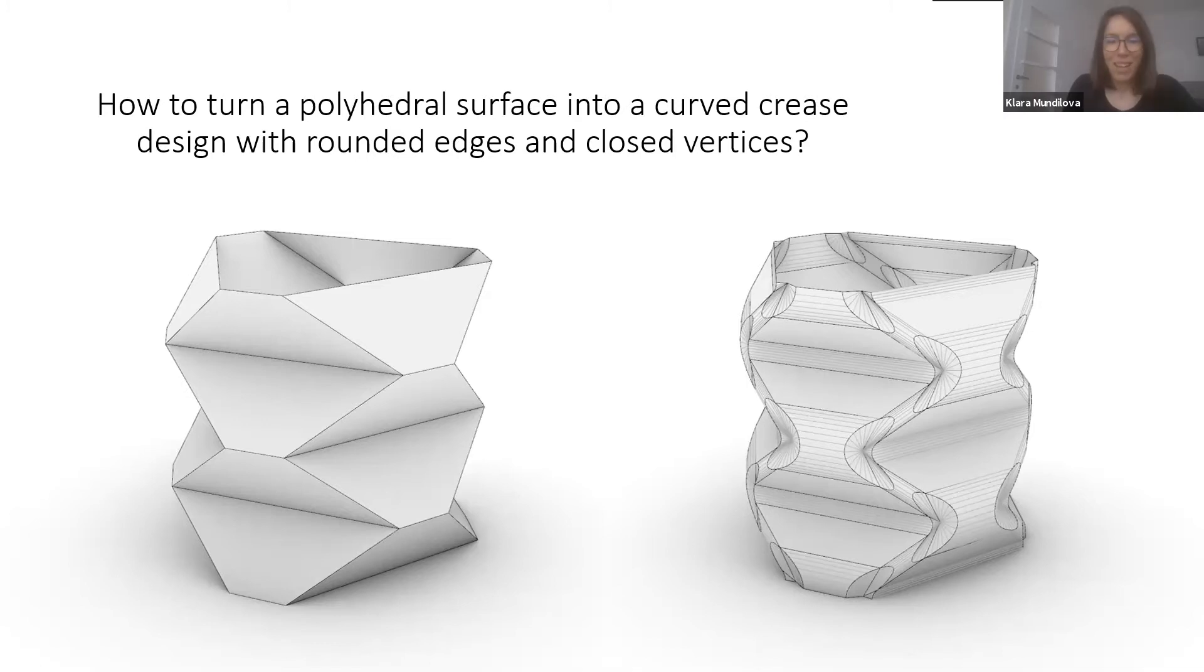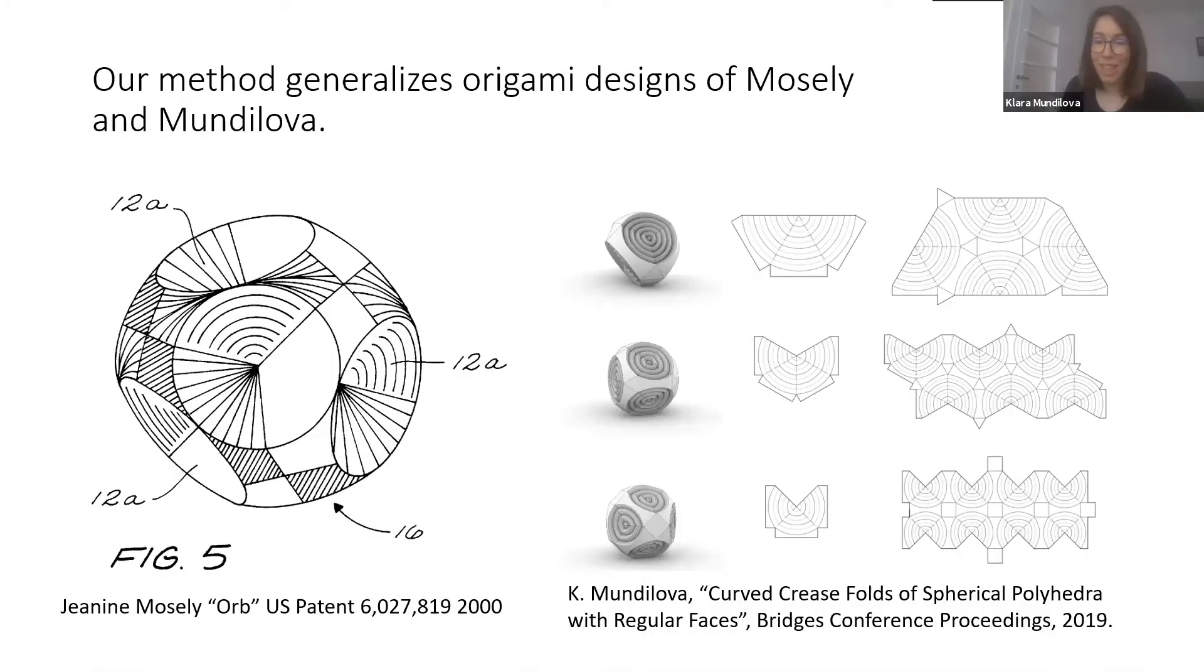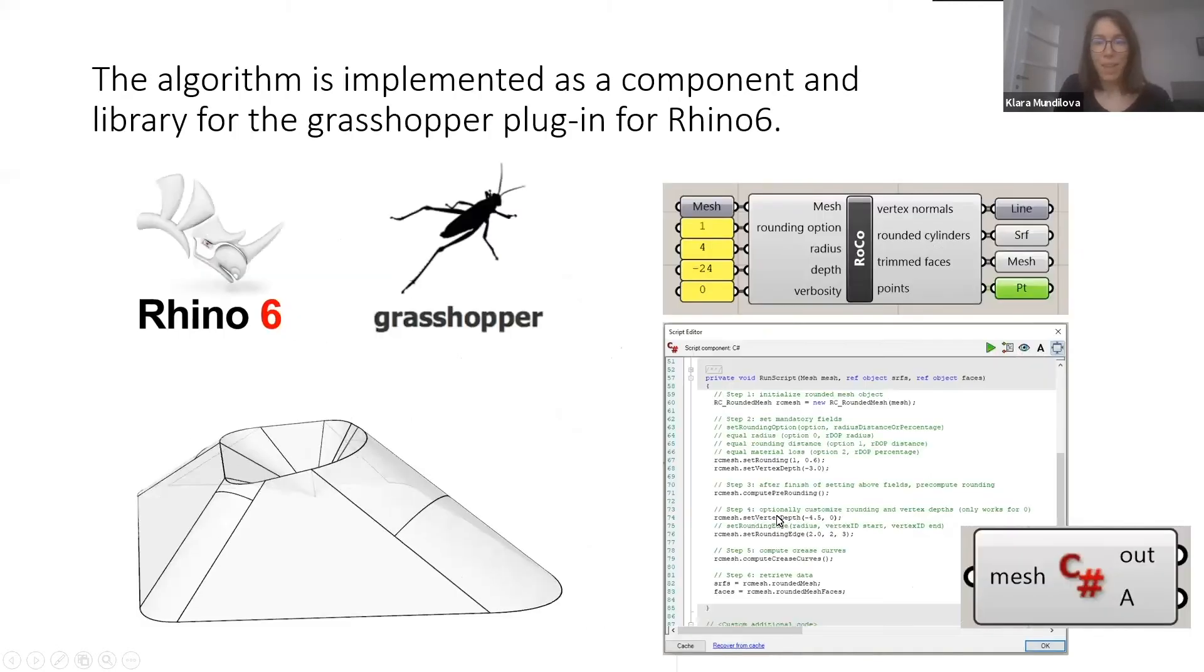This design is inspired by origami shapes of Janine Mosely, the orb, or by spherical polyhedra with regular faces that were published in the British Conference proceedings. We implemented our methods as a grasshopper component for Rhino 6 and we also offer a library to incorporate more complicated designs and to give the designer more freedom in choosing edge widths and depths of apexes.